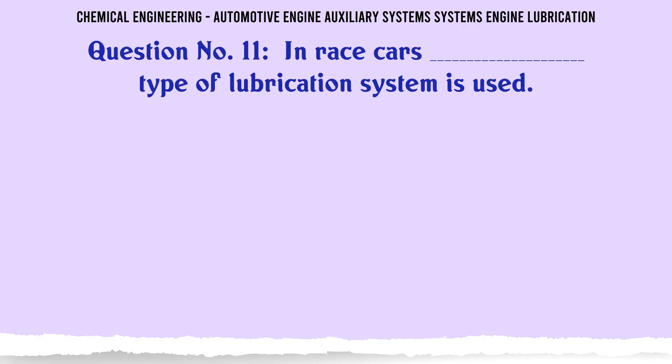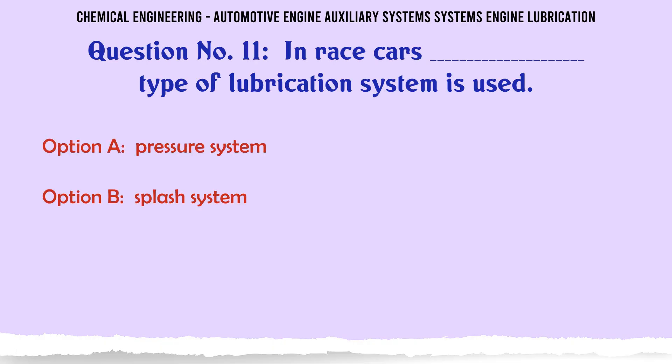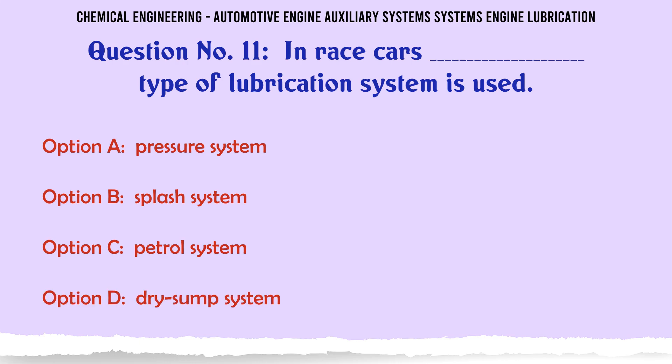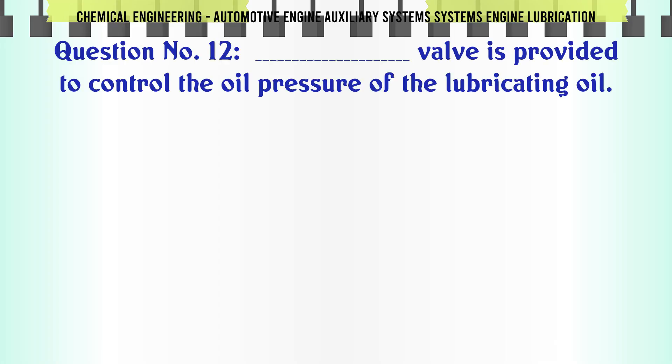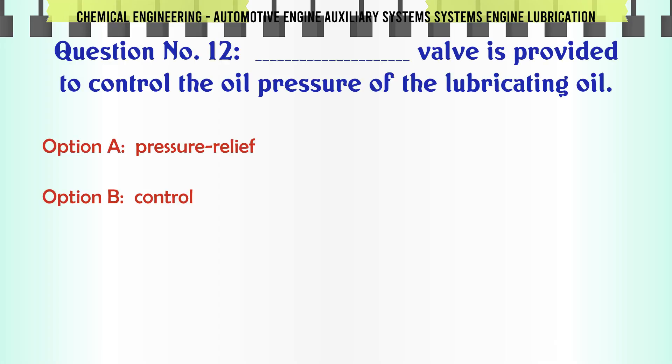In race cars, which type of lubrication system is used? a) pressure system, b) splash system, c) petrol system, d) dry sump system. The correct answer is dry sump system.